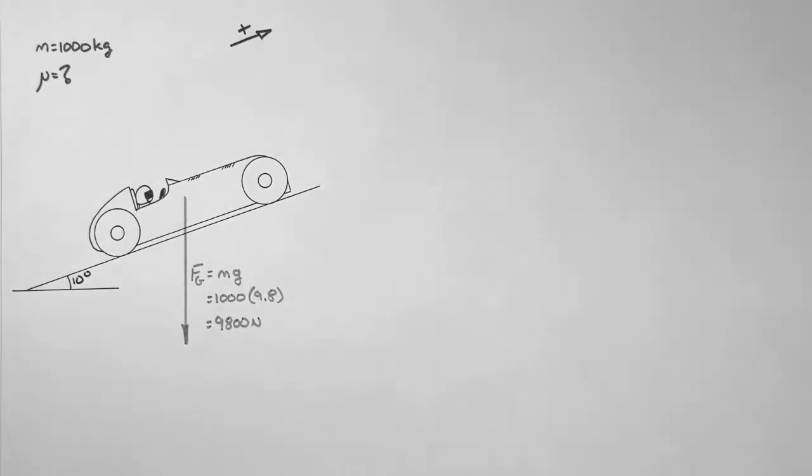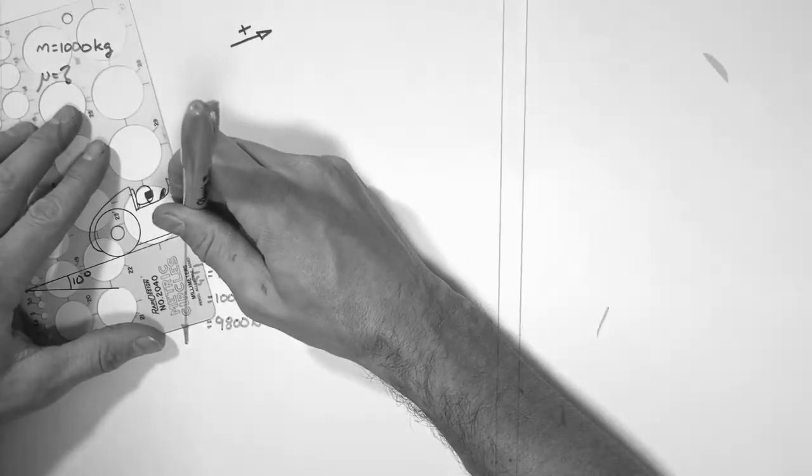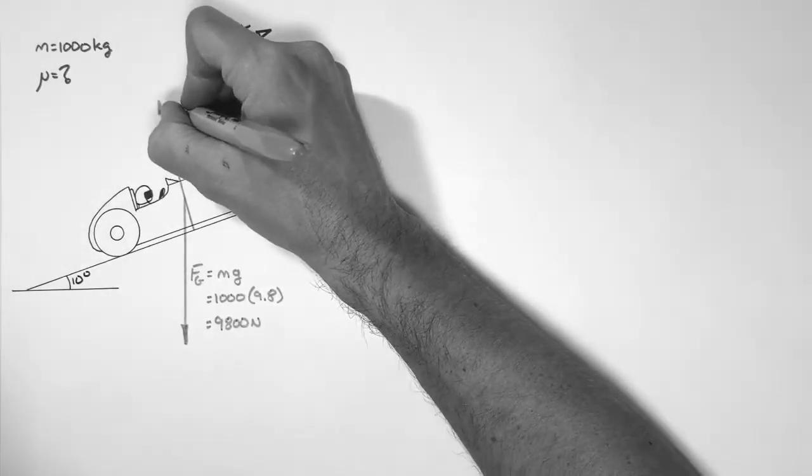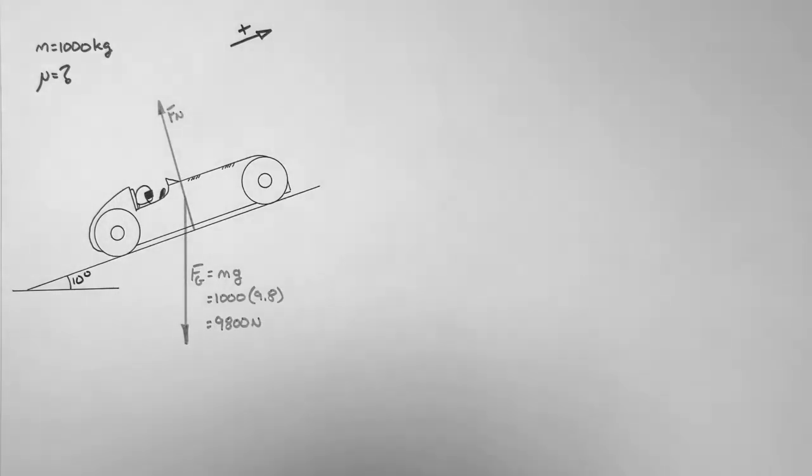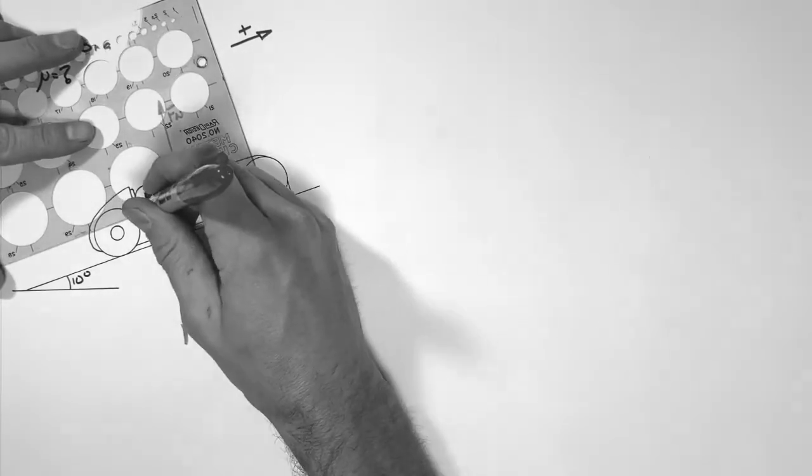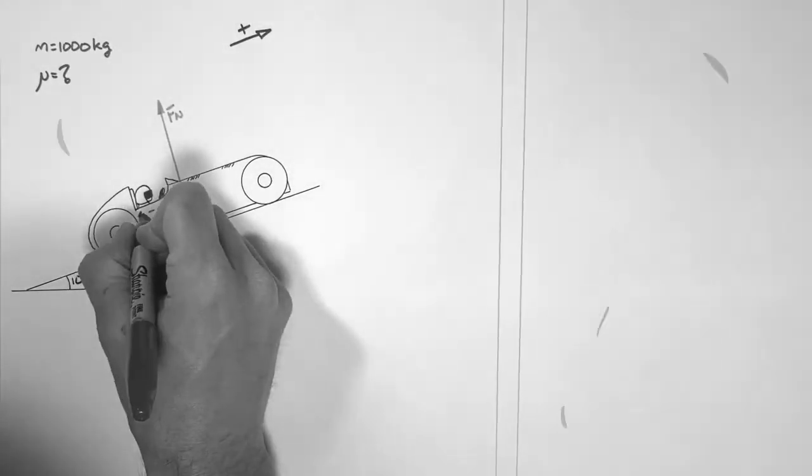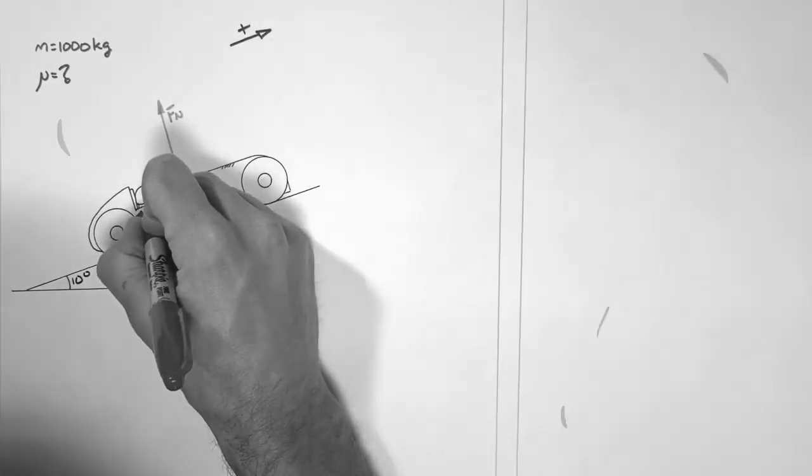The next force we show is the normal force. Remember, the normal force is always perpendicular to the surface an object is against. So in this case, that's going to be perpendicular to the hill. That means the normal force is up and to the left. Now remember, the normal force and the force by gravity combine to be what we call the force down the hill.